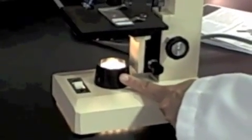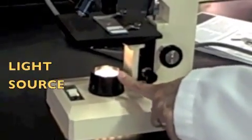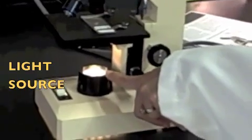Okay, so tell your partner the name of this piece right here. That's the light source. See the light coming out? Remember, this is a microscope that's powered by electricity. What's the name of this piece right here? Good, that's the diaphragm.